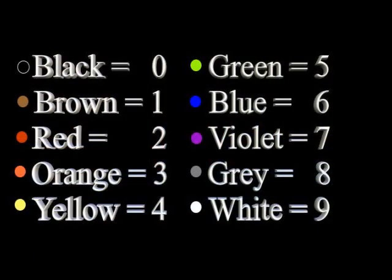Black is zero, brown is one and so on. Here is how to calculate the value of a resistor using the colored bands.